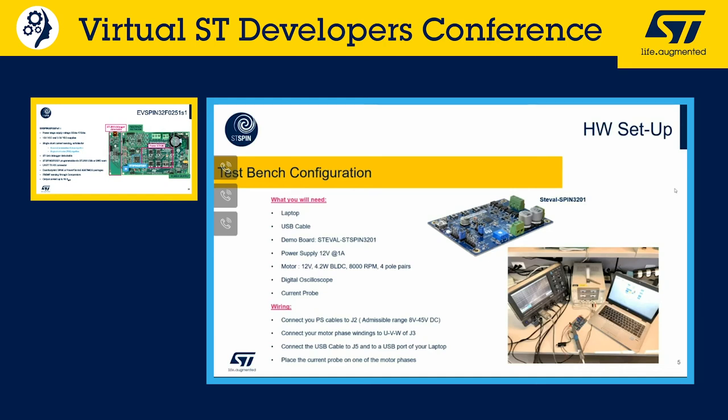For wiring, connect power supply cables to J2 — the admissible voltage range is 8 to 45V DC. Connect the motor winding phases to J3 and the USB cable to J5, with the other end to a USB port on your laptop. The current probe is placed on phase V. The laptop on the right side is running the motor control workbench. The board is already supplied as indicated by the red LED.